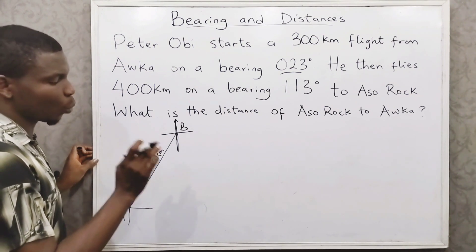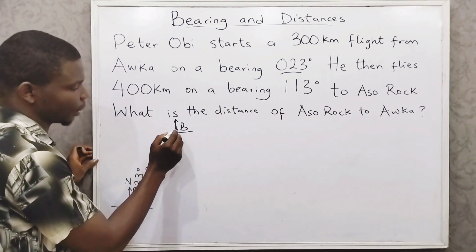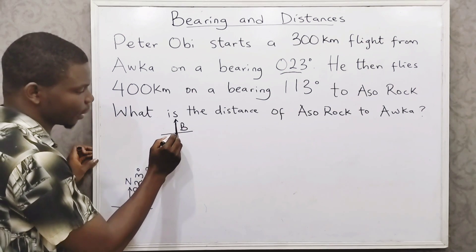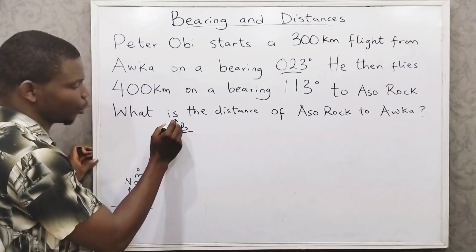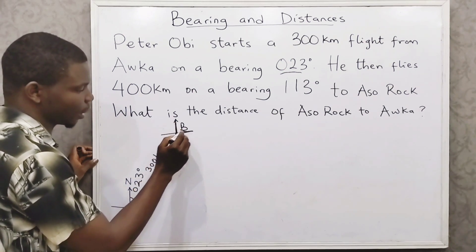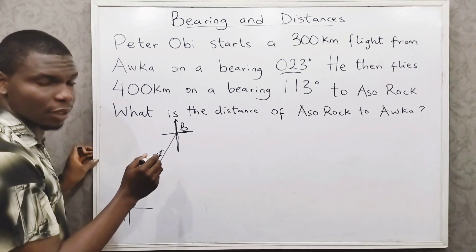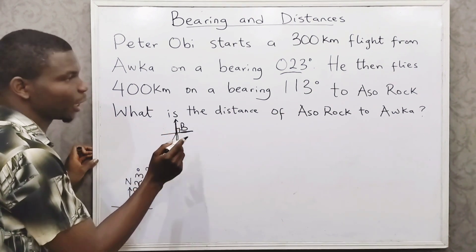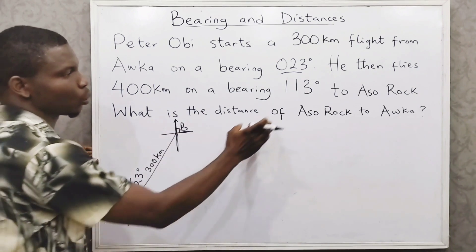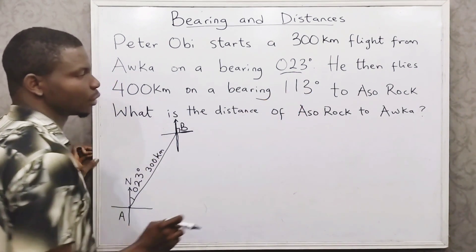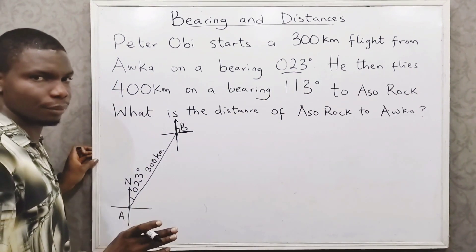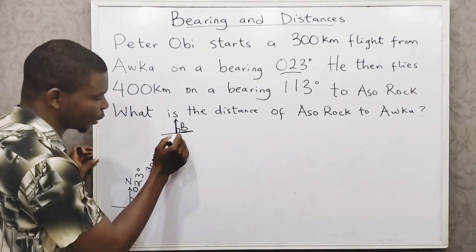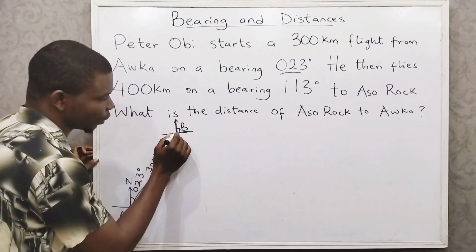On a bearing of 113 degrees — this is the north side of B, this is the east side, and you know the north to east makes 90 degrees. He goes 113 degrees, so what do you add to 90 to get 113? You add 23. So there's an extra 23 degrees, placing his direction around here.